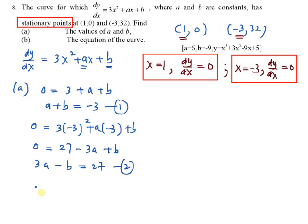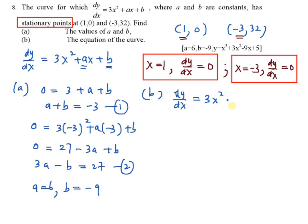Solve this simultaneous equation. You will get the value a equals 6 and b equals negative 9. So now your dy/dx equals 3x squared plus 6x minus 9.